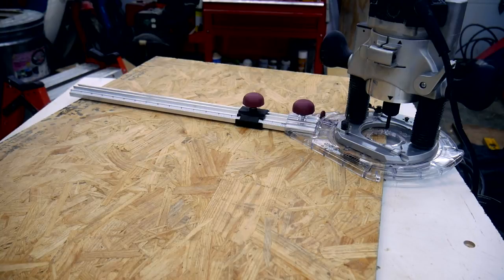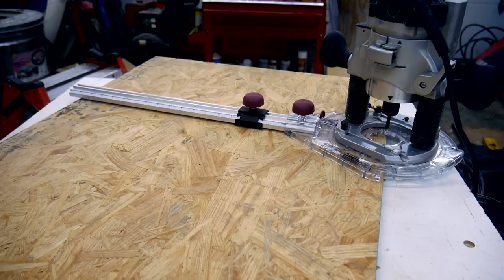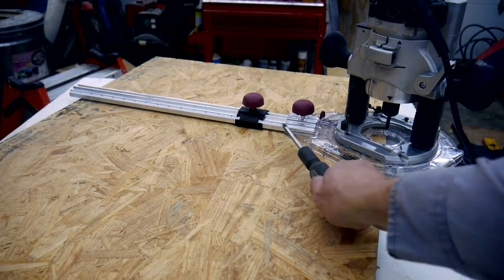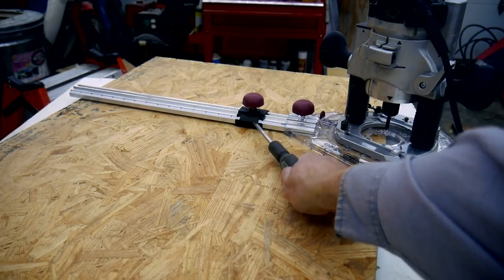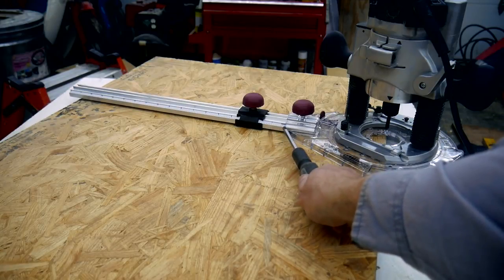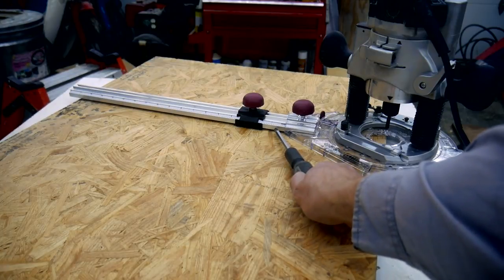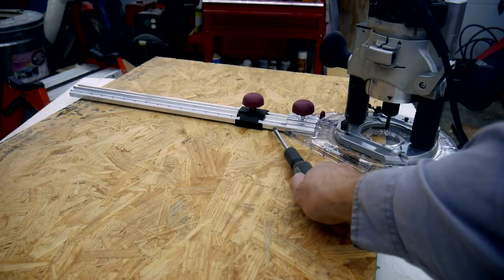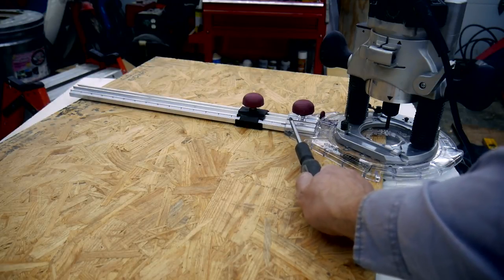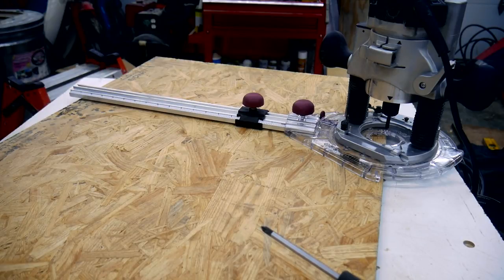Right off the bat I can tell that this circle jig is going to be a bust. This is where the beam connects to the base plate. This is actually where the pivot is. Now take a look at that distance. This is going to be a 24 inch diameter circle and I've only got maybe 2 inches left. My guess is the smallest circle I can make with this jig is going to be 20 inches, which is a little ridiculous. It looks like I'm making my own circle jig after all.